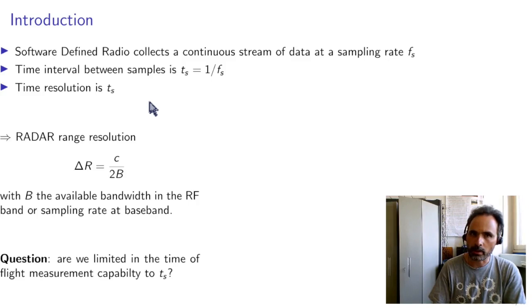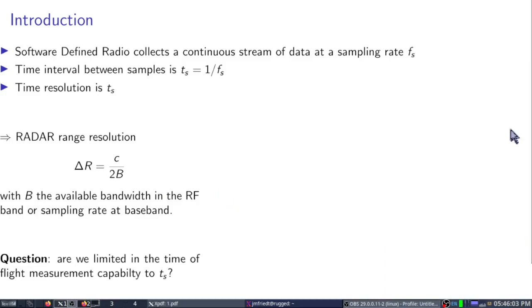So whatever the time delay in the subsequent processing, each data in a continuous stream is timestamped implicitly every Ts period. Now this story is found in the radar range resolution delta R where C, the speed of light, divided by 2 for a two-way trip, divided by B, the bandwidth, defines the sampling frequency Fs at baseband. The question here is whether are we limited in our timing resolution by Ts or is there anything better that we can do.